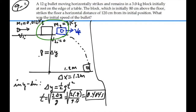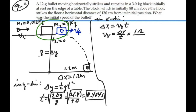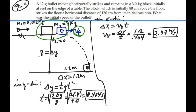It's in the air for 0.404 seconds. Now we can use that for the x direction. With no acceleration, delta x equals the x velocity times time. So the x velocity equals delta x divided by time: 1.2 meters divided by 0.404 seconds. That is 2.97 meters per second. Since that's our x velocity for all the time it's in the air, that is the final velocity of the bullet-block combination right after the collision.